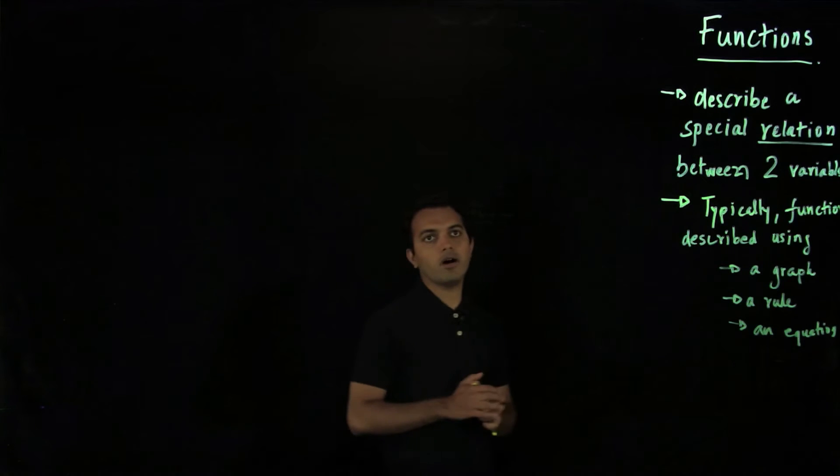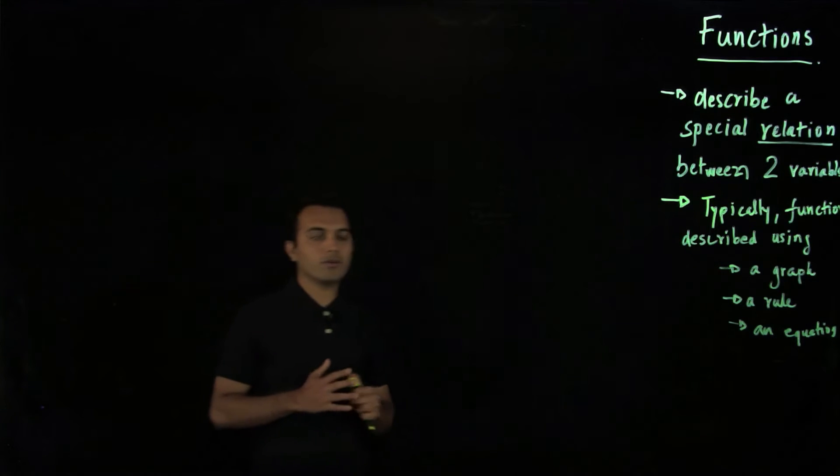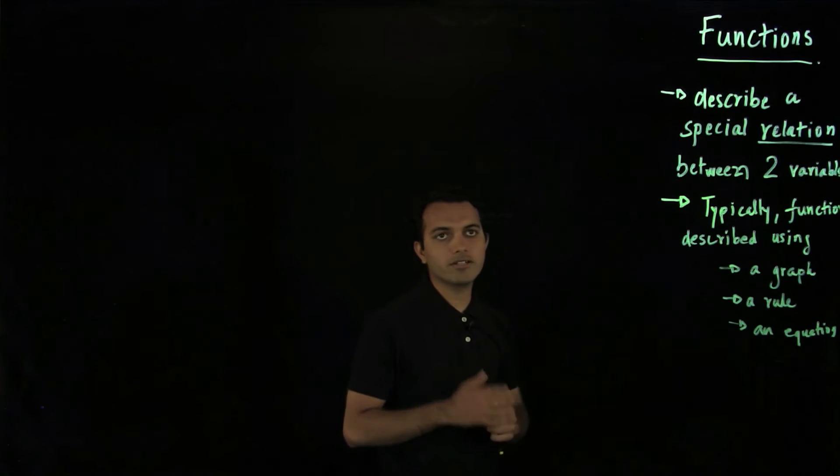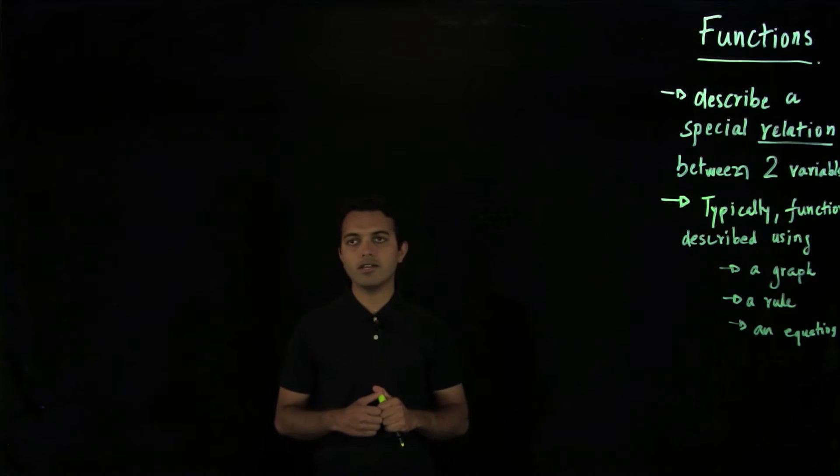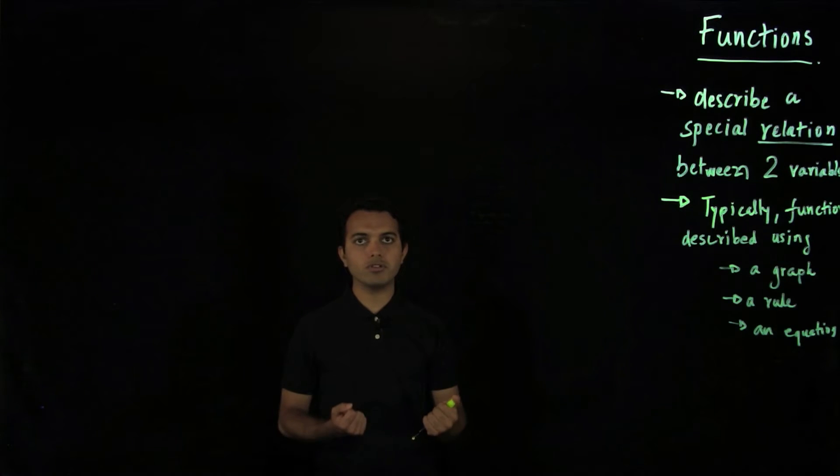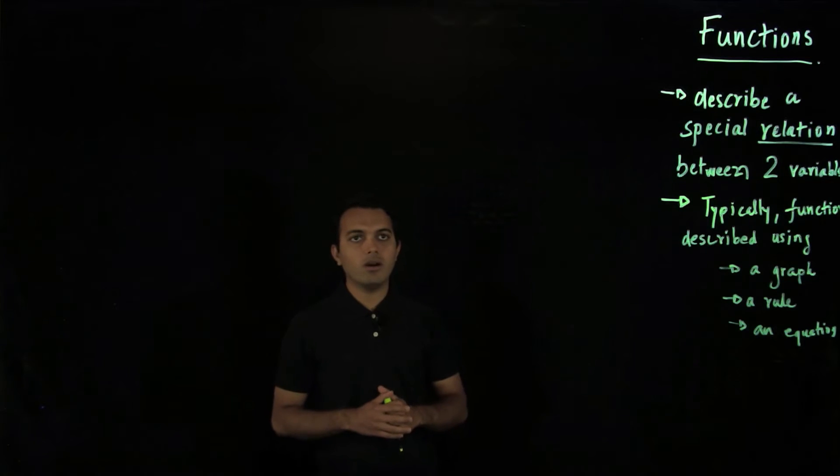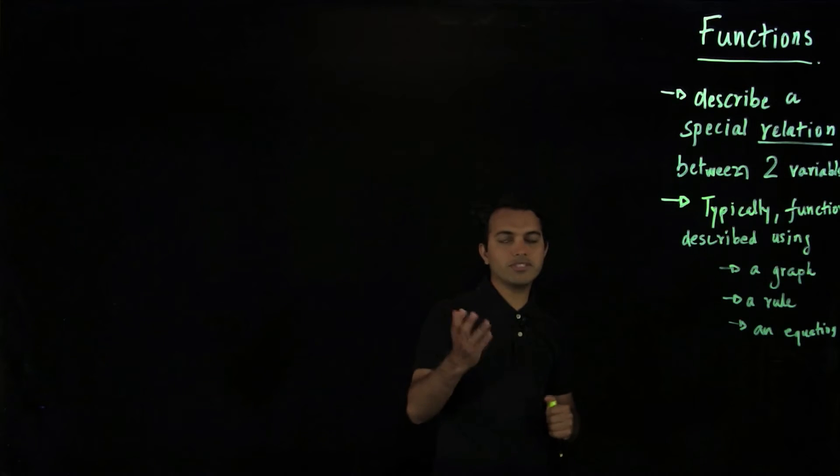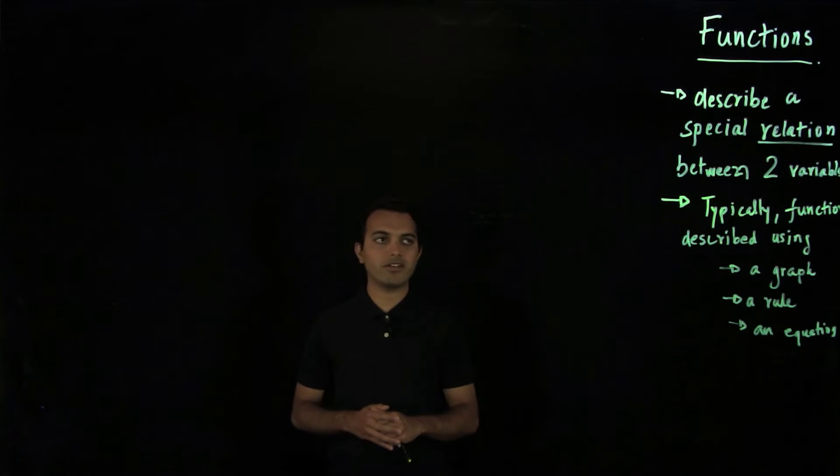When you have two variables, either you can draw a graph, draw a plot to show how they are related, or you can have a very intuitive rule which you can very easily describe. Or at times, as we'll see more and more, we'll be using equations to describe a function.